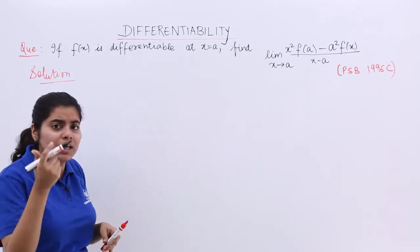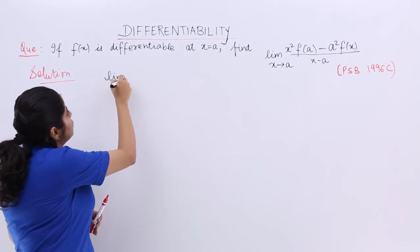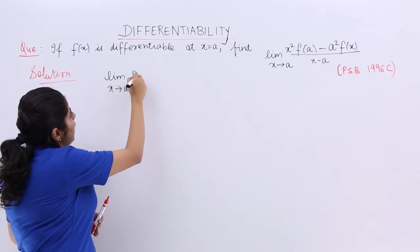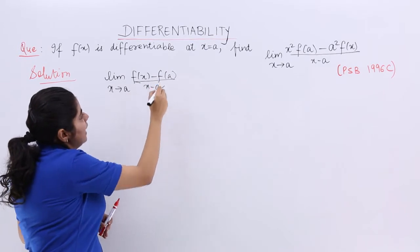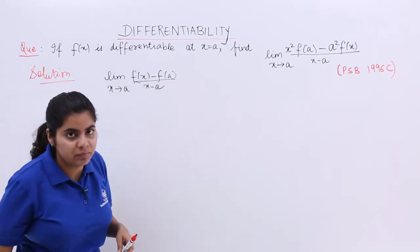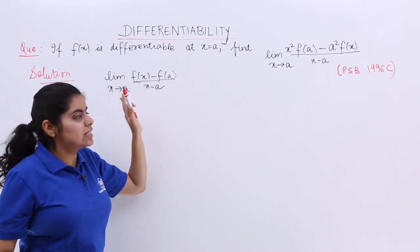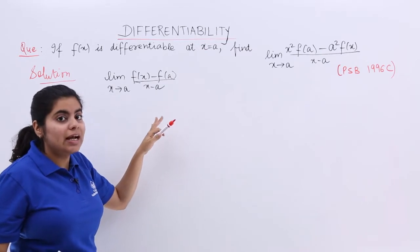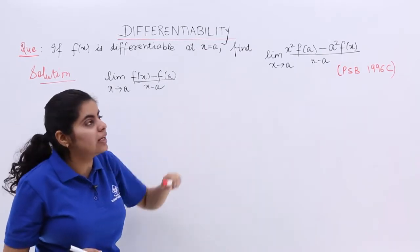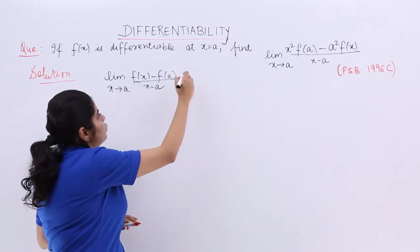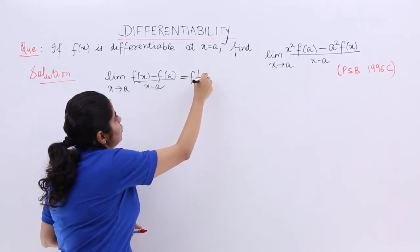First see what else is given to you. Differentiable at x = a means limit x tends to a of [f(x) - f(a)]/(x - a) exists finitely. Now if this exists, I can easily find out the expression. This actually is equal to f'(a).